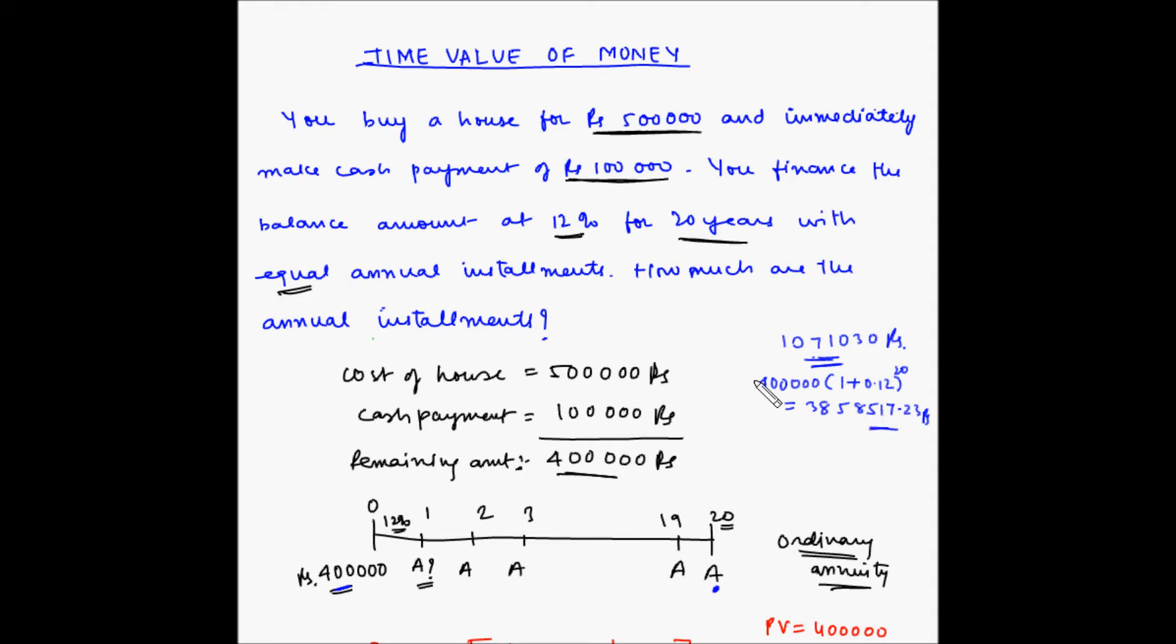So basically as an analysis, you would do this calculation not with 4 lakhs but with the entire money of 5 lakhs, because ₹1,00,000 which you paid as cash payment could also be put in the bank at 12%. So if you put 5 lakhs, how much is the amount that you are going to get at the end of 20 years? And you would hope that the price of the house after 20 years is much higher than that amount.